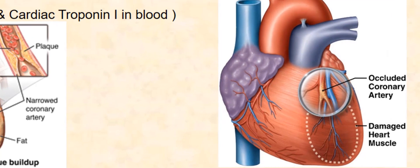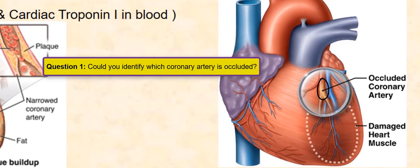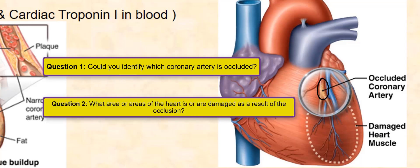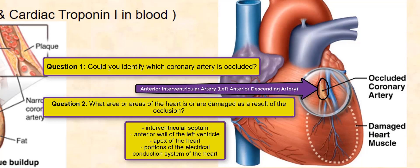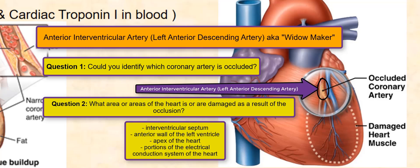Looking at this diagram, I have two questions for you. First: could you identify which coronary artery is occluded? Second: what area or areas of the heart are damaged as a result? Pause the video and answer these questions. The answer to the first question is the anterior interventricular artery, or left anterior descending artery. The answer to the second question: the interventricular septum, the anterior wall of the left ventricle, the apex of the heart, and portions of the electrical conduction system of the heart. Since this is the major coronary artery supplying oxygen to these areas, severe or complete occlusion of the anterior interventricular artery or left anterior descending artery will likely lead to sudden death. Therefore, this artery is sometimes referred to as the widow-maker.